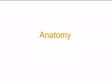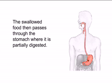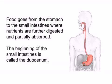Anatomy. The digestive system helps the body digest and absorb the food we eat. Swallowed food goes through the esophagus, the feeding tube, then passes through the stomach where it is partially digested. Food goes from the stomach to the small intestines where nutrients are further digested and partially absorbed. The beginning of the small intestines is called the duodenum.